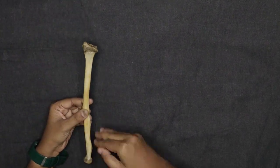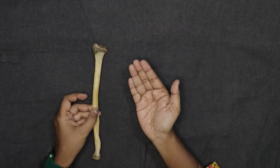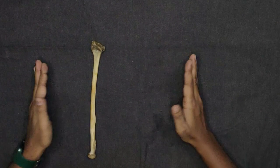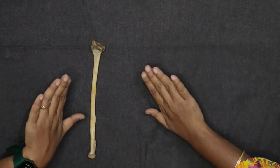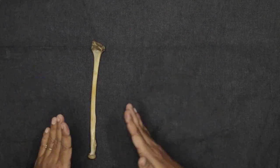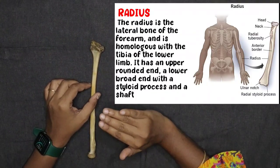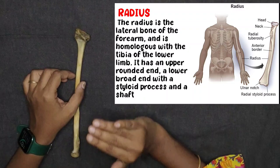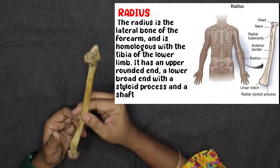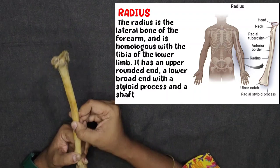The radius bone is homologous with the tibia. Just as the tibia is in the lower limb, the radius is the corresponding bone in the upper limb.